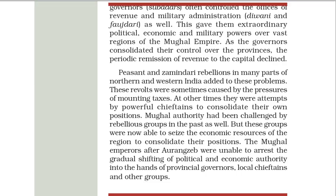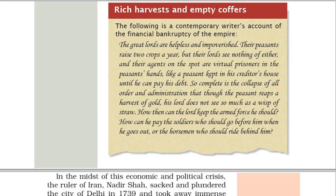Rich harvests and empty coffers. The following is a contemporary writer's account of the financial bankruptcy of the empire: 'The great lords are helpless and impoverished. Their peasants raise two crops a year, but their lords see nothing of either, and their agents on the spot are virtual prisoners in the peasants' hands, like a peasant kept in his creditor's house until he can pay his debt. So complete is the collapse of all order and administration that though the peasant reaps a harvest of gold, his lord does not see so much as a wisp of straw. How then can the lord keep the armed force he should? How can he pay the soldiers who should go before him when he goes out, or the horsemen who should ride behind him?'